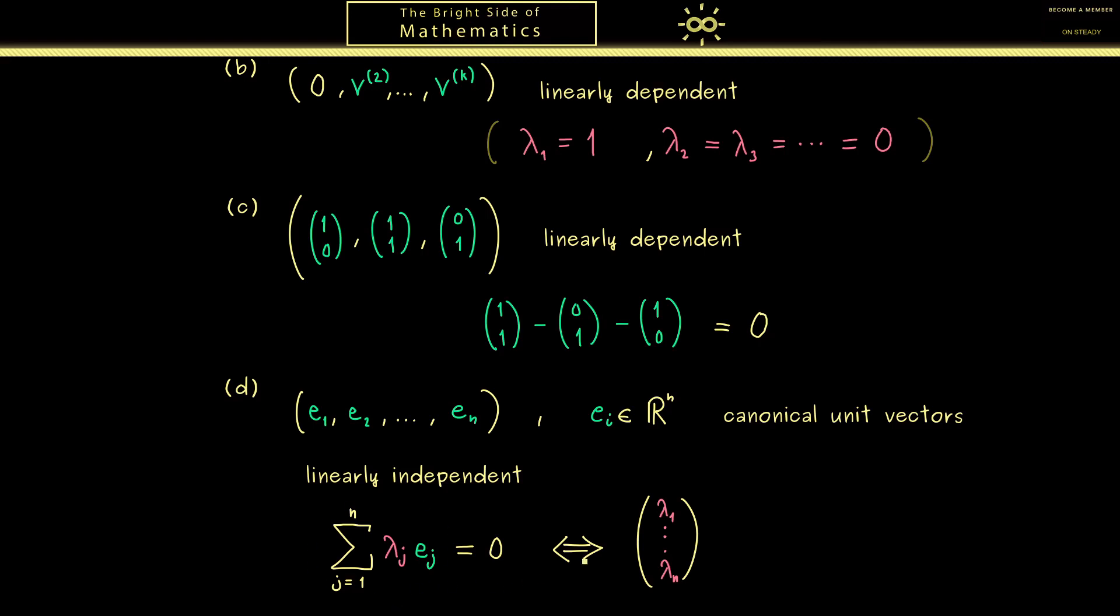And now the right hand side says this is the zero vector in R^n. So you see, this is just another way of saying that all the components are zero. And now if we read this from left to right, we see this is exactly the definition of linear independence.